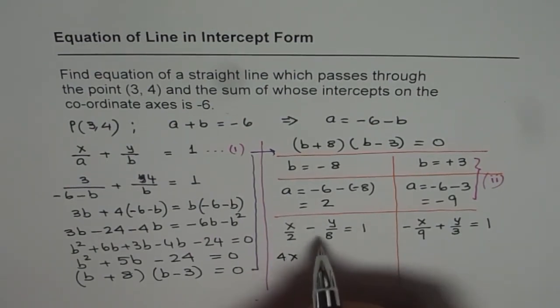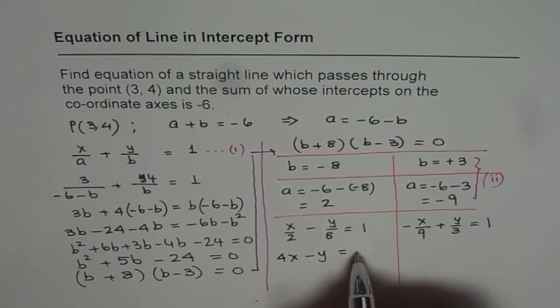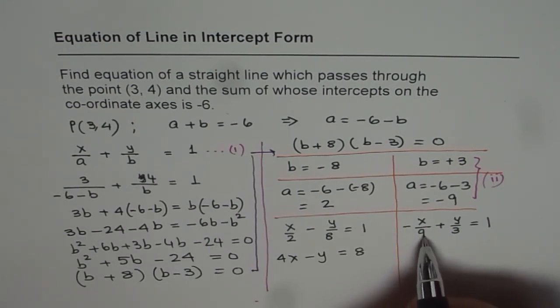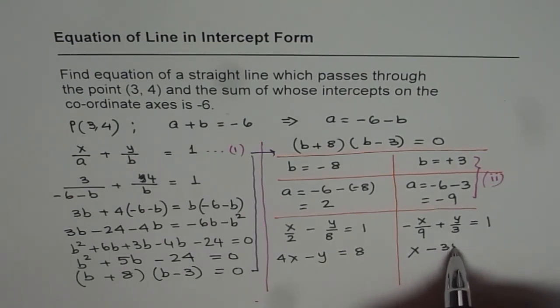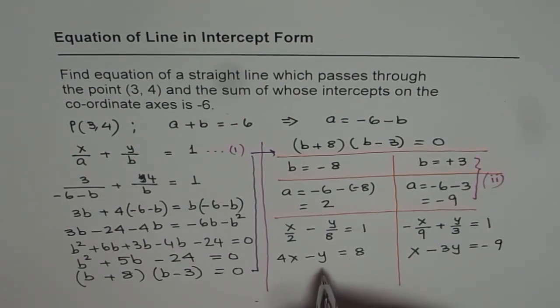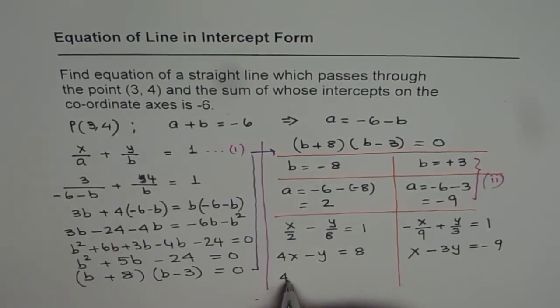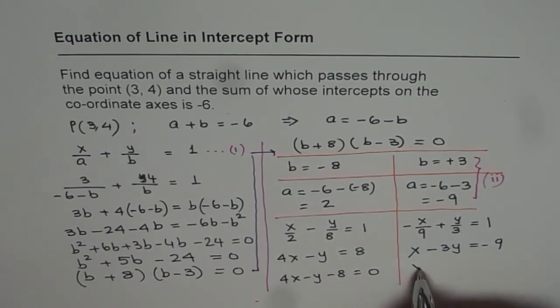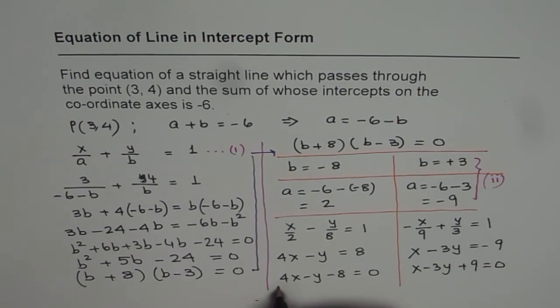Let me actually multiply by 8, and then we get 4x, and here we get -y = 8. That is one way. Let's multiply this by 9. In fact, let's multiply this by -9. If I do -9, I get x here, -3y = -9. Putting all these things together, writing them in standard form, we get 4x - y - 8 = 0, or x - 3y + 9 = 0. That becomes our equation in standard form.